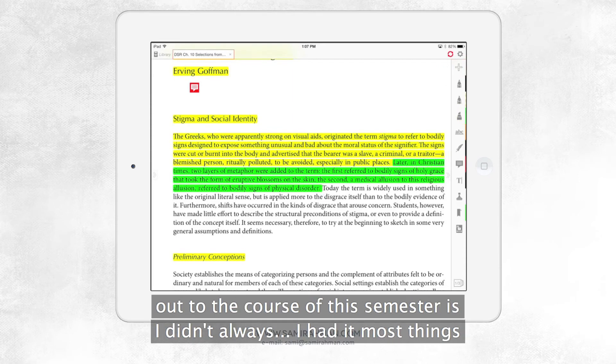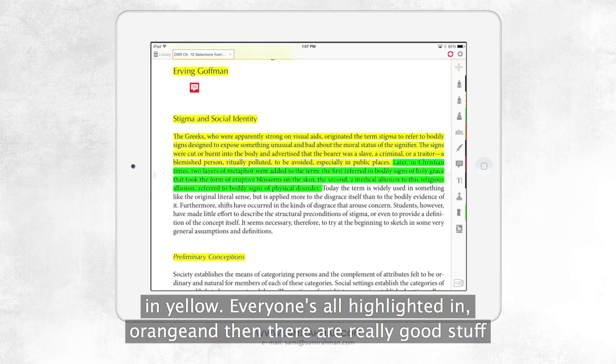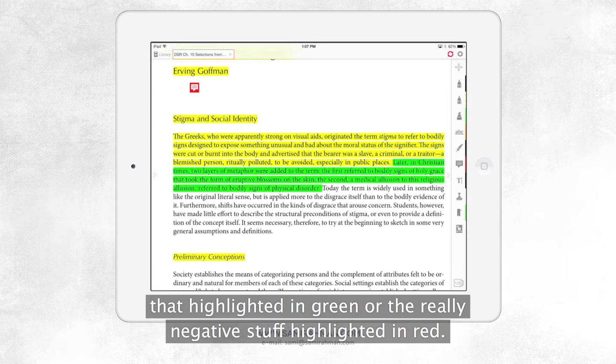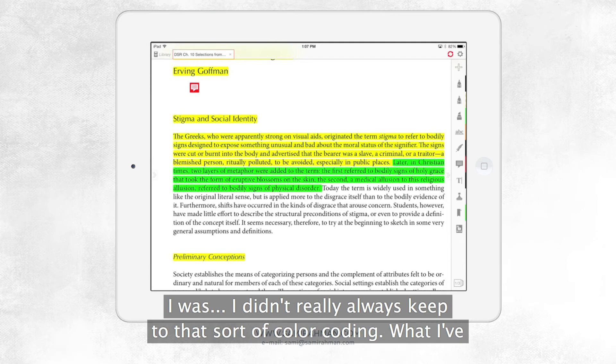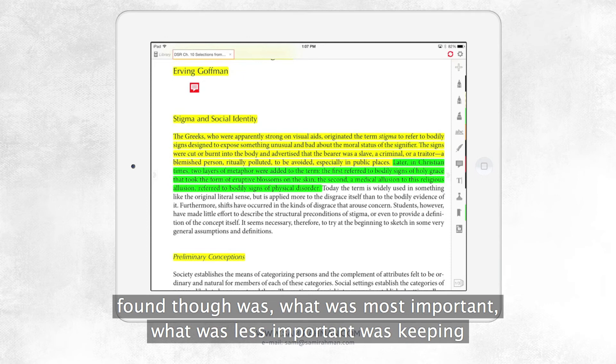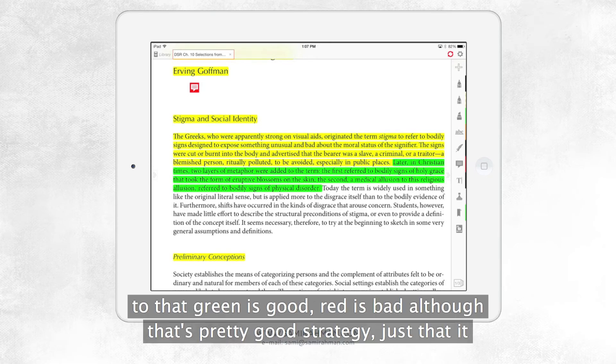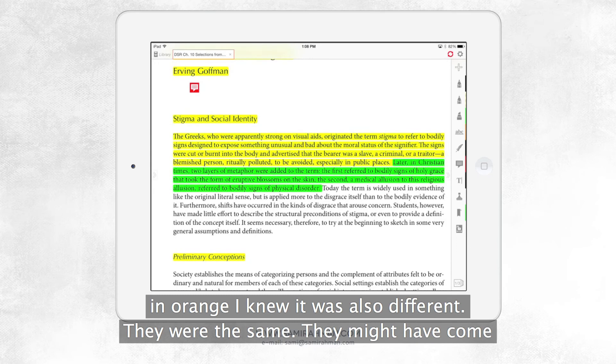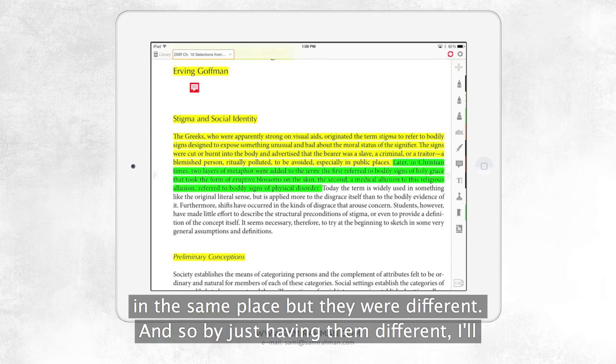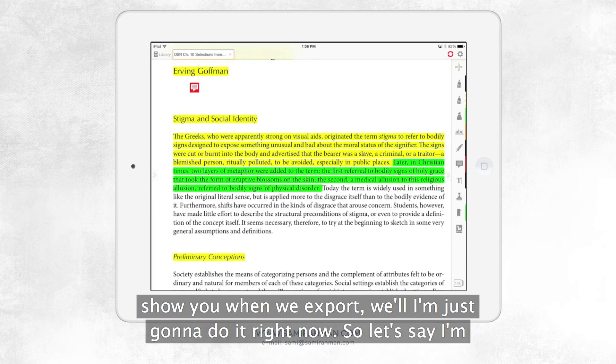What I found out through the course of the semester is I didn't always, I highlighted most things in yellow. Every once in a while I'll highlight in orange and then the really good stuff I'd highlight in green. Or the really negative stuff I'd highlight in red. I wasn't, I didn't really always keep to that sort of color coding. What I found though was what was more important, what was less important was keeping to that green is good and red is bad, although that's a pretty good strategy. Just that it was different. If I had one in orange and the next one in yellow and the next one in orange, I knew that those were different. They were the same. They might have come from the same place, but they were different. And so by just having them different, and I'll show you when we export, well, let me just do it right now.